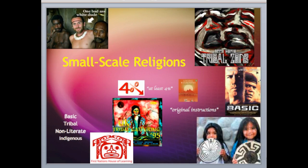I wonder what the 4% in the center of the slide means. Why does the percentage sign have a downward arrow? Approximately 4% of the world's population would fall under the small-scale religious category. Like the downward arrow on the percentage sign, there are decreasing numbers of people who actively participate in tribal religiosity.